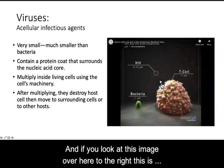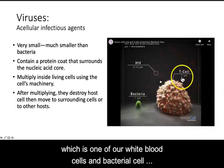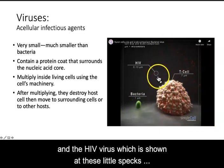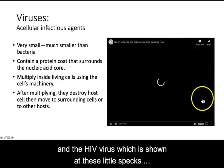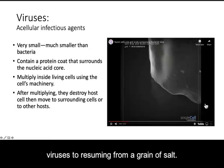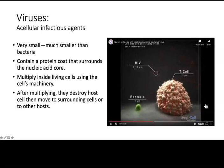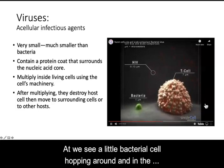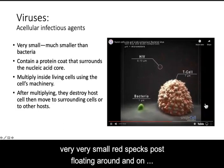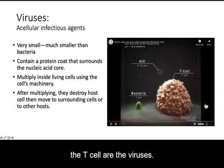If you look at this image over here to the right, this is showing us a comparison in size between a human T cell, which is one of our white blood cells, a bacterial cell, and the HIV virus, which is shown as these little specks. This video is meant to give you a sense of the scale of viruses — we zoom in from a grain of salt, we see a human T cell, a little bacteria cell hopping around, and then the very, very small red specks both floating around and on the T cell are the viruses.